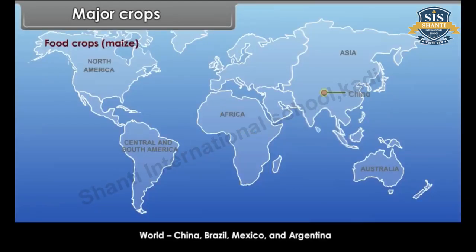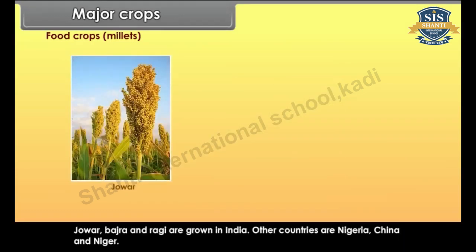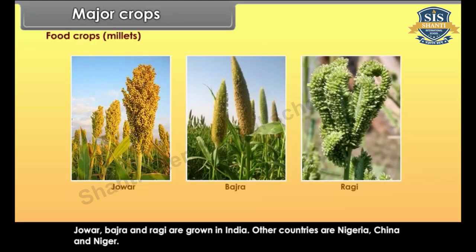World producers of maize include China, Brazil, Mexico and Argentina. Millets are also known as coarse grains and can be grown on less fertile and sandy soils. It is a hardy crop that needs low rainfall and high to moderate temperature and adequate rainfall. Jowar, Bajra and Ragi are grown in India. Other countries producing millets are Nigeria, China and Niger.